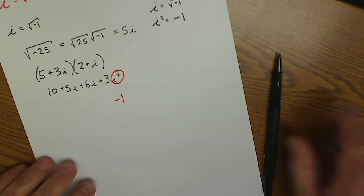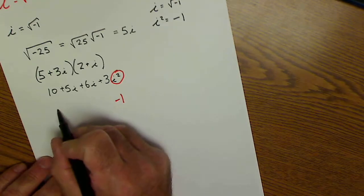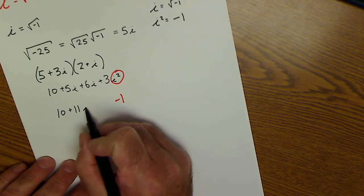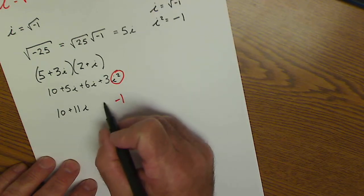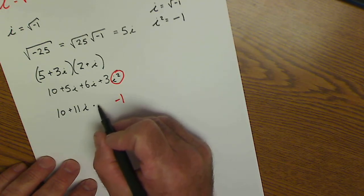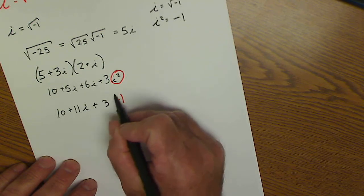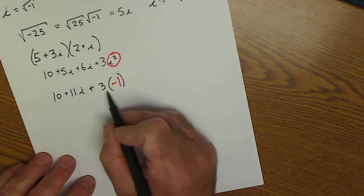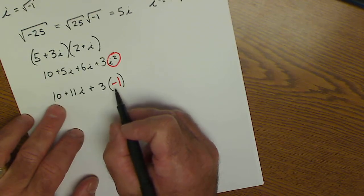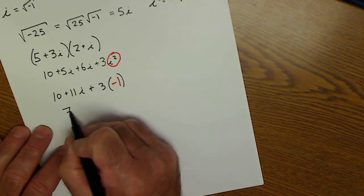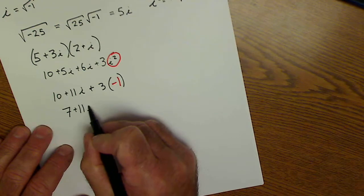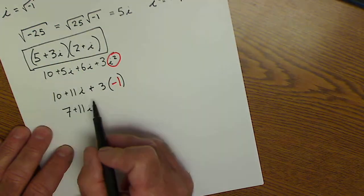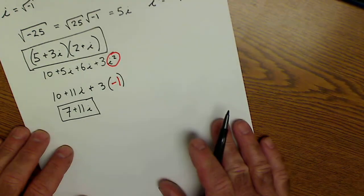So I have 10 plus 5i plus 6i, which is 11i, plus 3 times i squared. So this is a negative 3. Negative 3 and 10 is 7 plus 11i. So if you're asked to multiply these two things together, the solution would be 7 plus 11i.